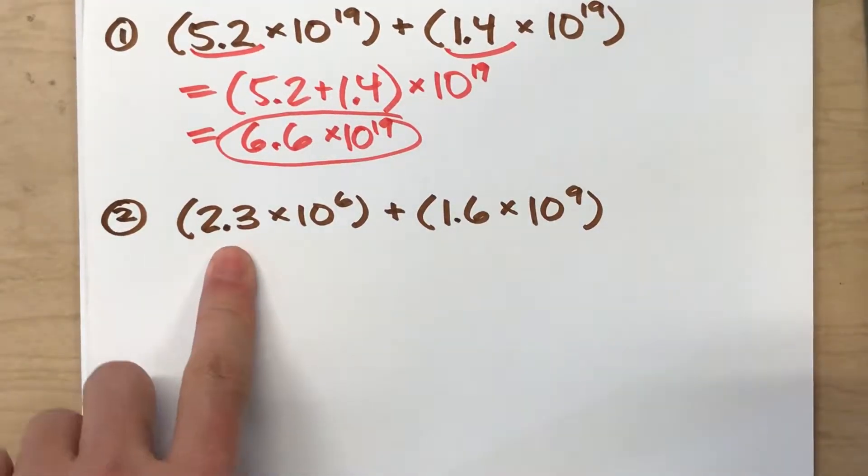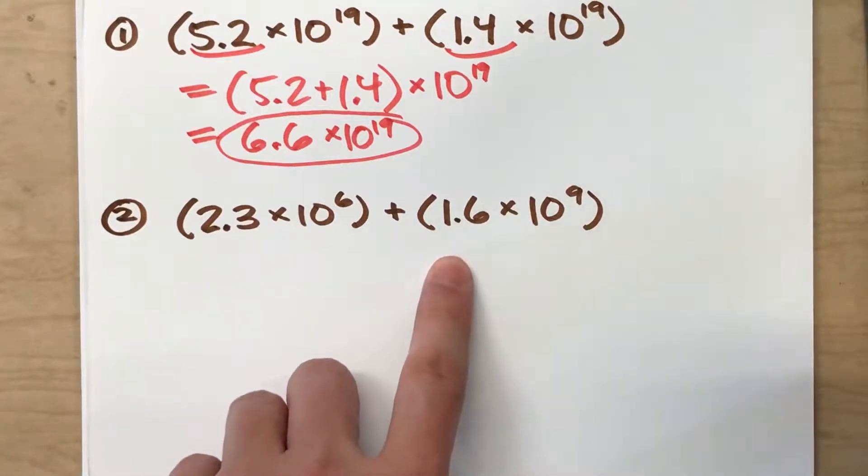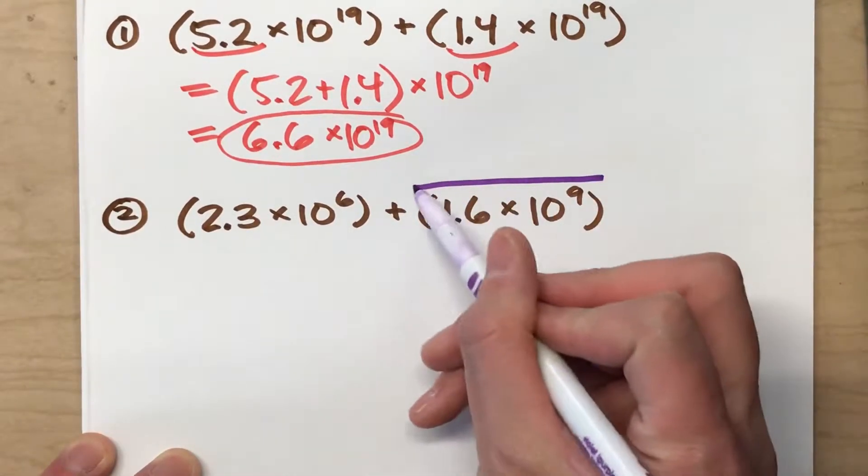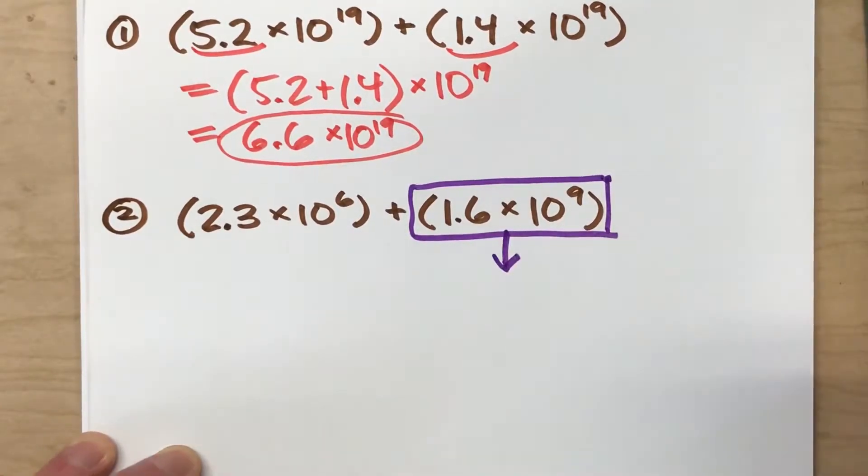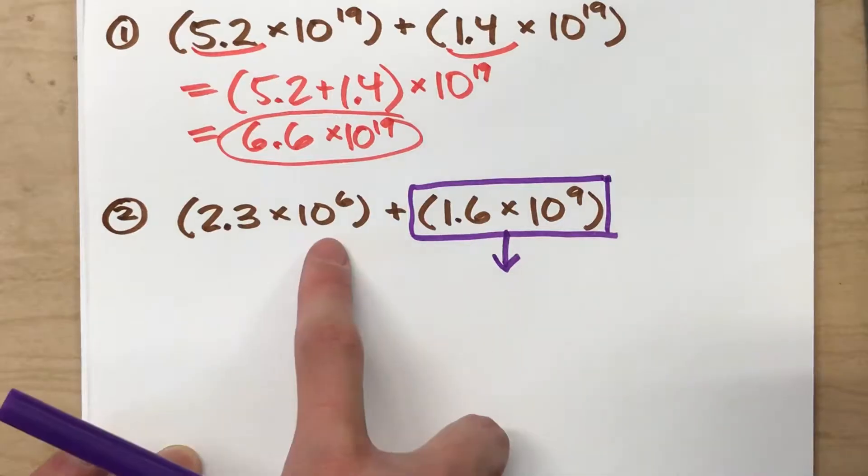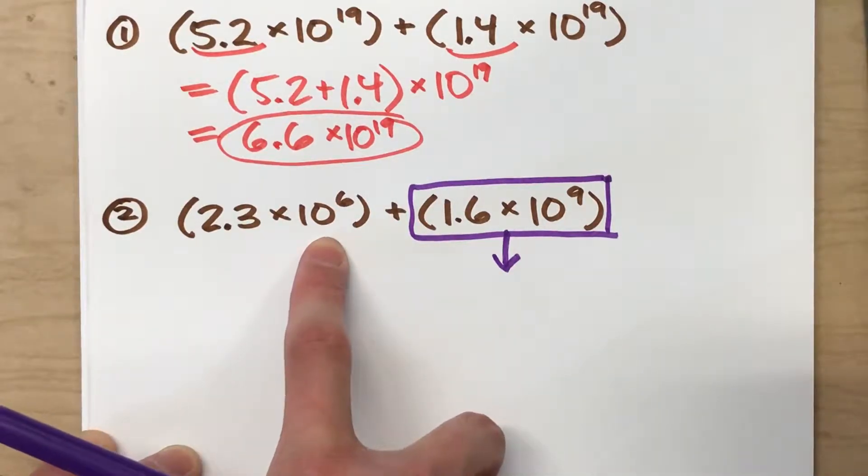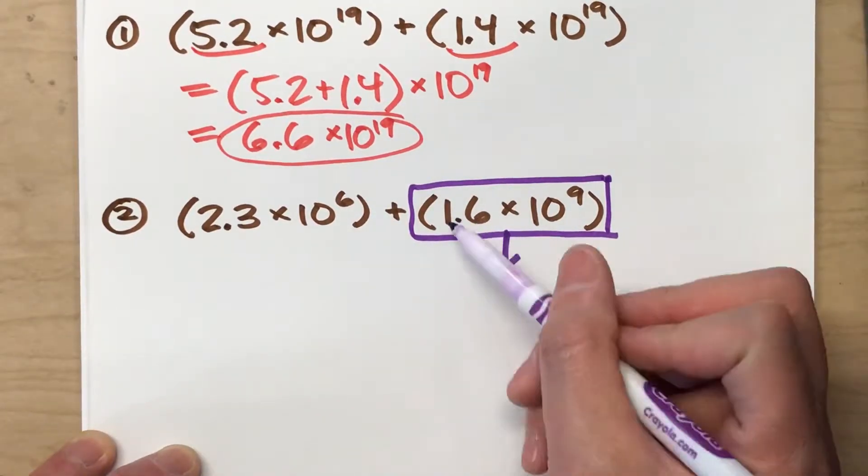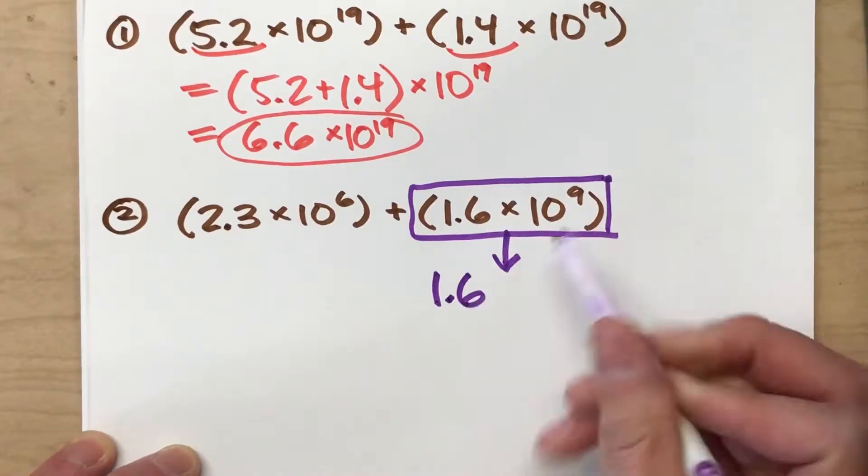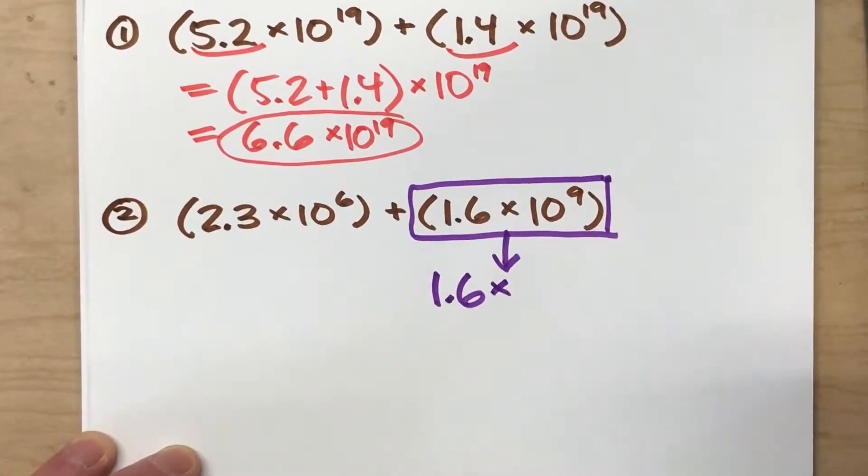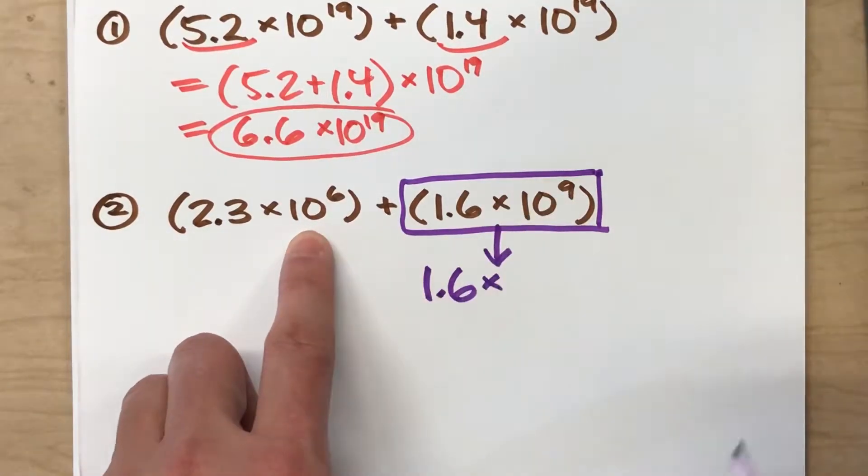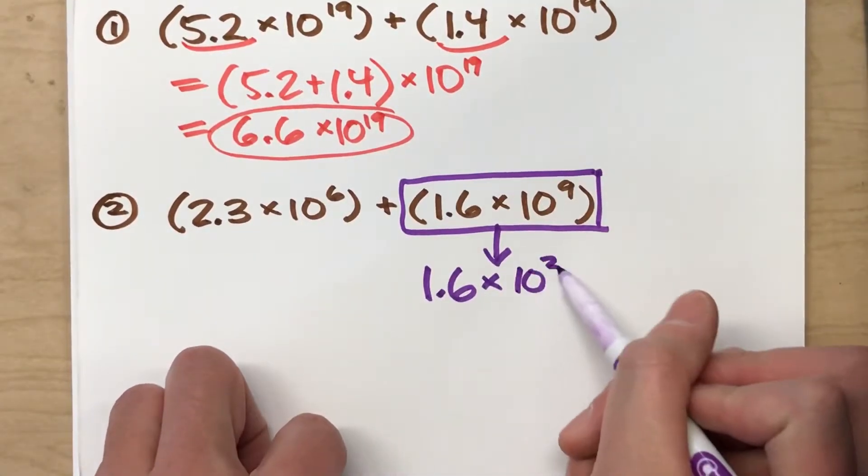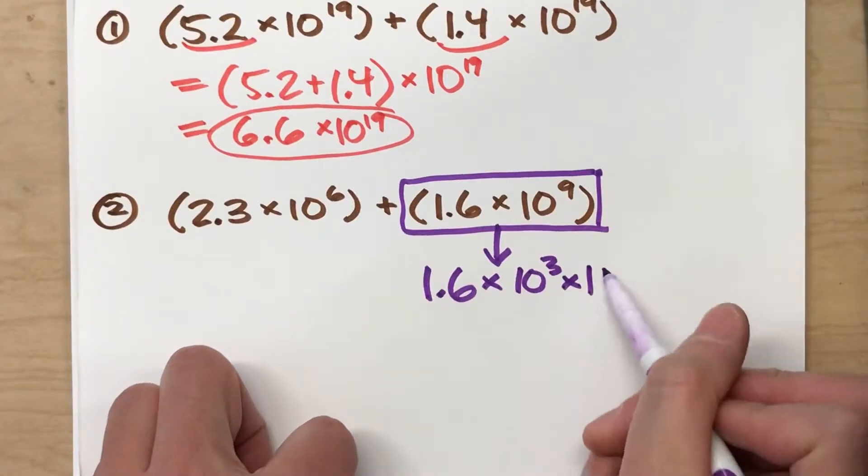I've got 2.3 times 10 to the 6th power. I've got 1.6 times 10 to the 9th power. I'm going to take the one with the bigger power and change it so that it has the same power of 10 as this one. So I'm going to keep the 1.6 but instead of 10 to the 9th power, I'm going to break it up.